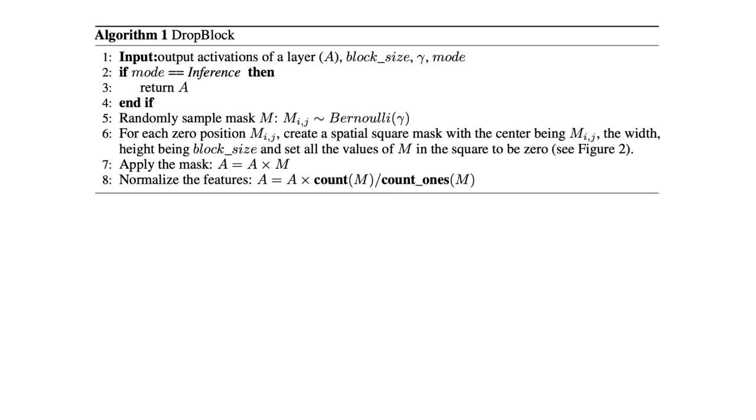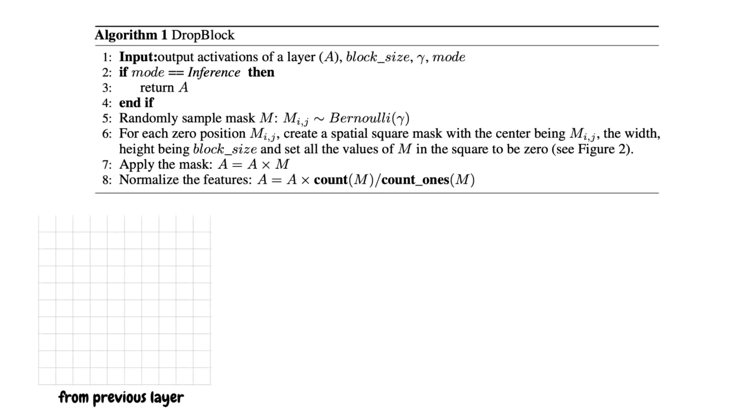Say we want to perform some convolution operation. The input would be a set of activations from the previous layer. For now, let's say it's a 10 x 10 grid.